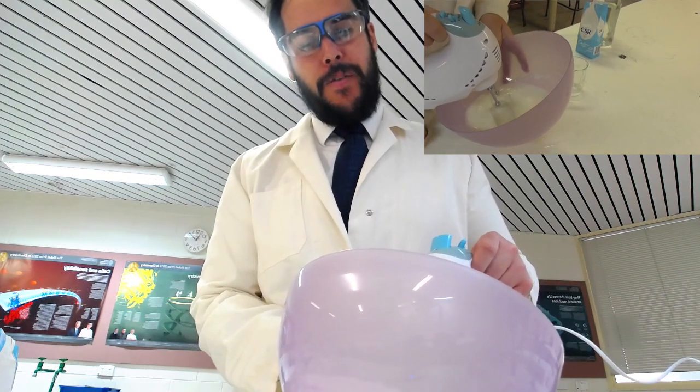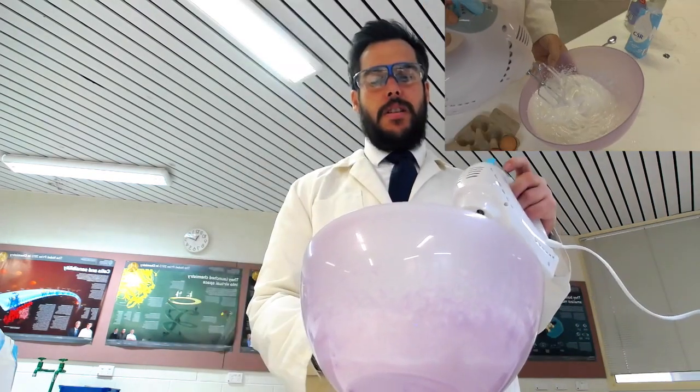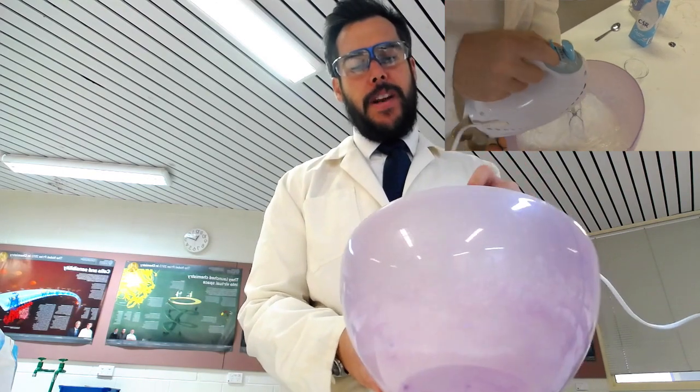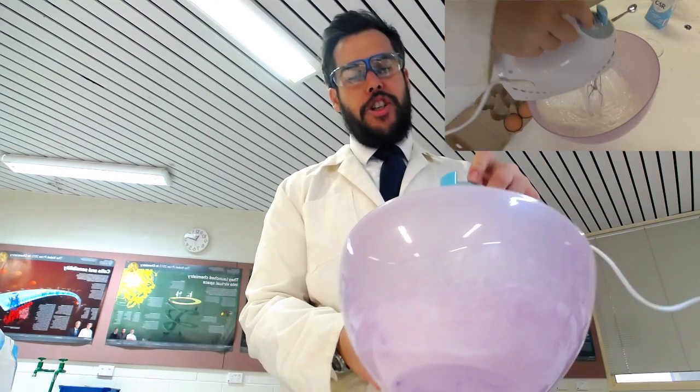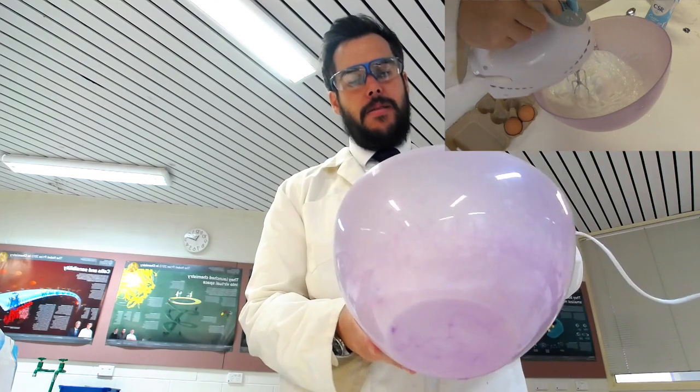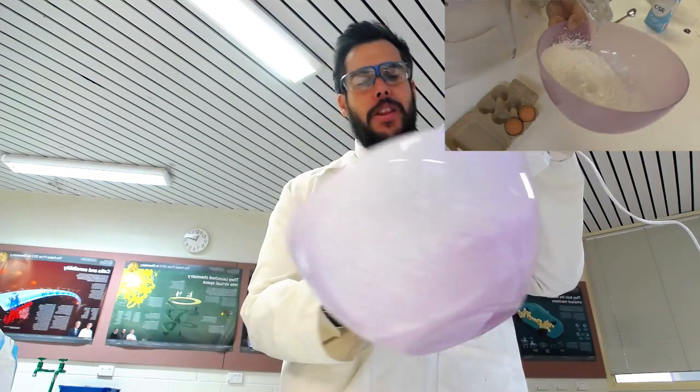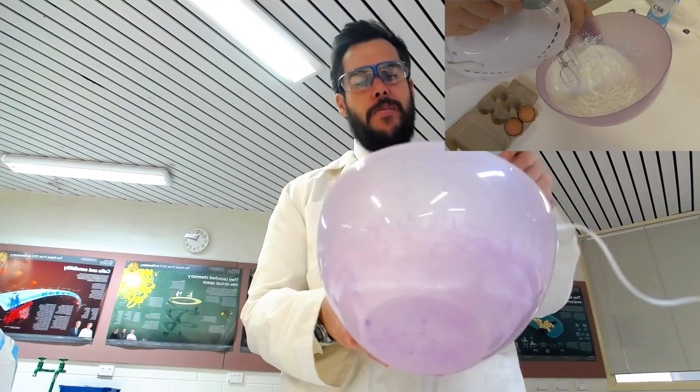Keep mixing until you form stiff peaks. Your meringue is finished when it forms peaks that hold their shape. Like this. It should be thick in the bowl.